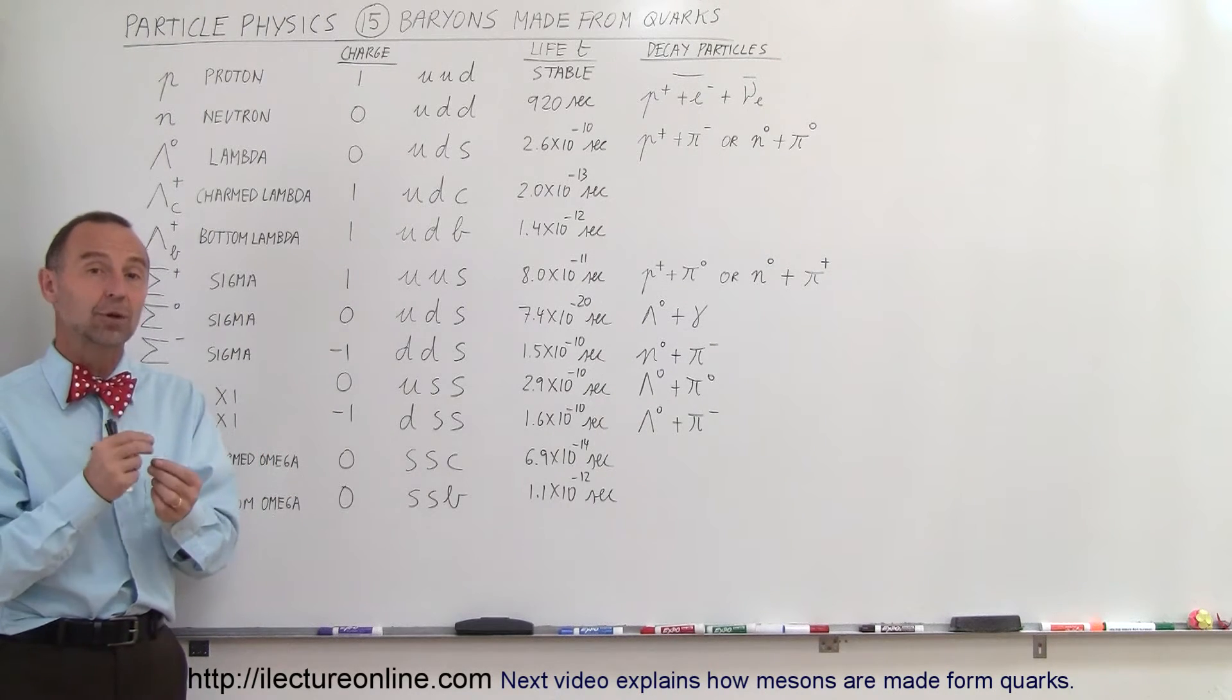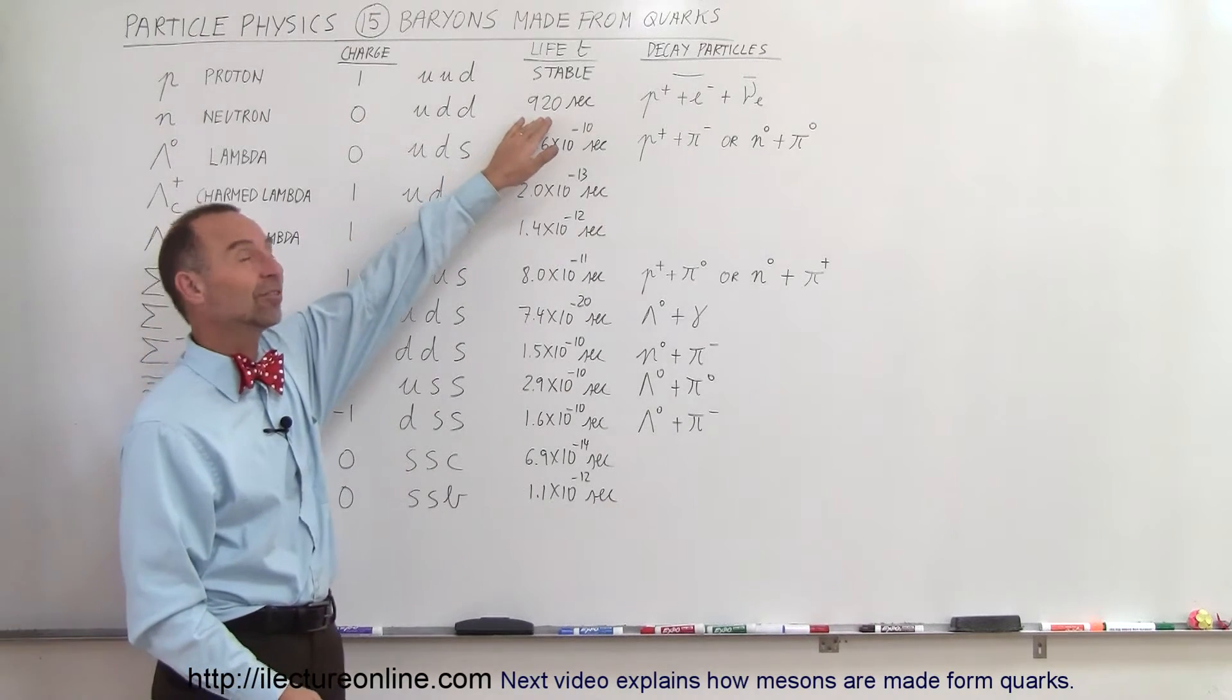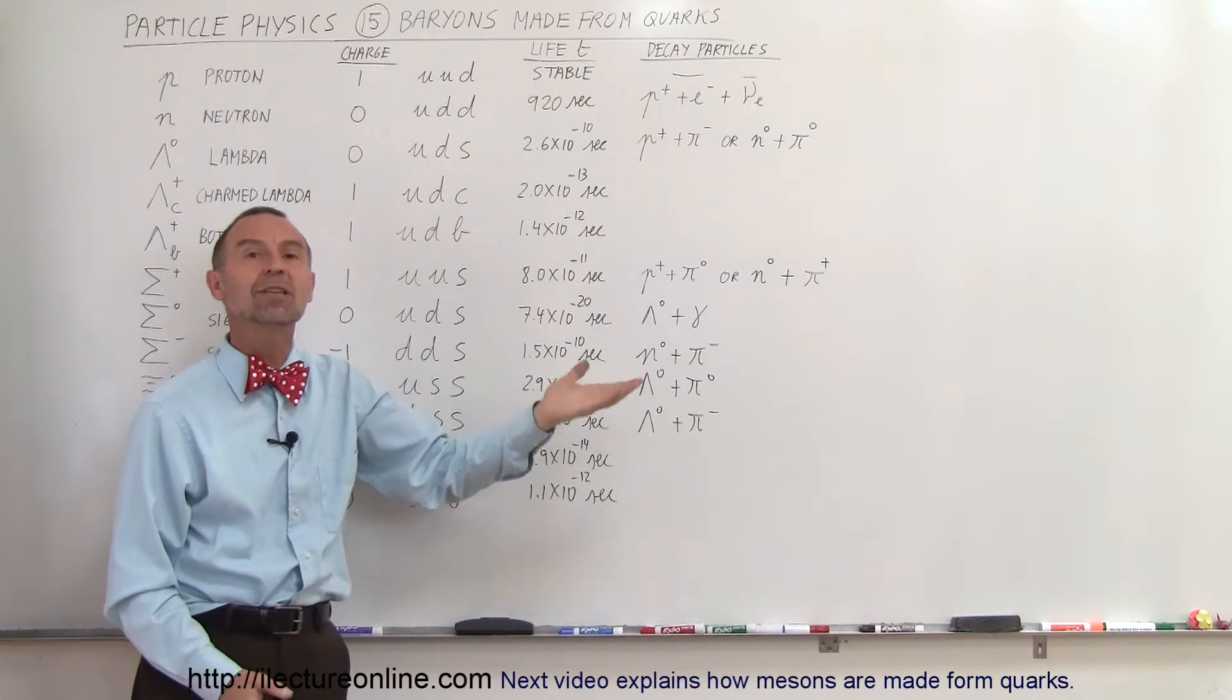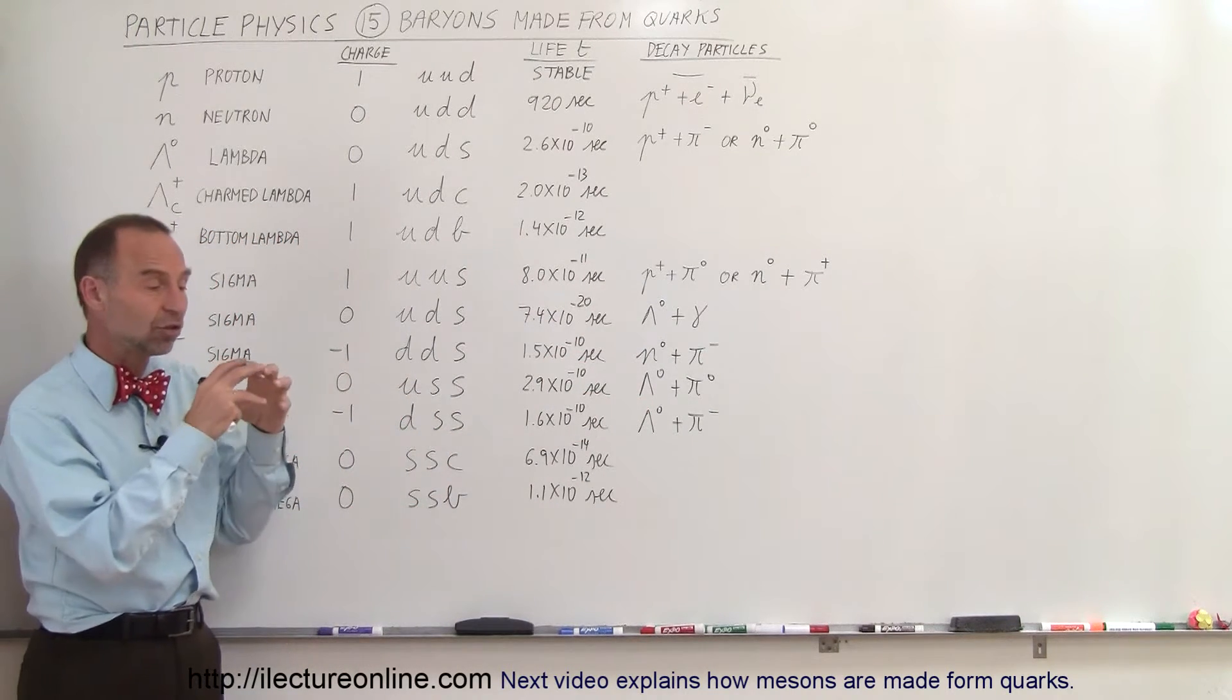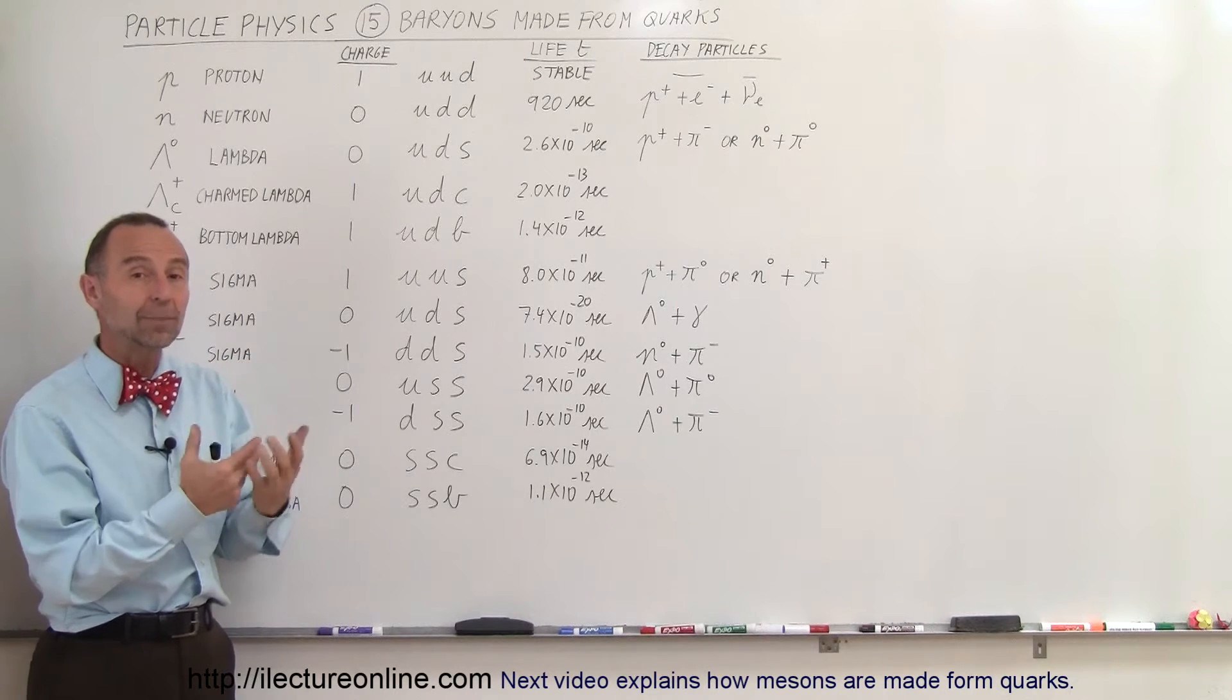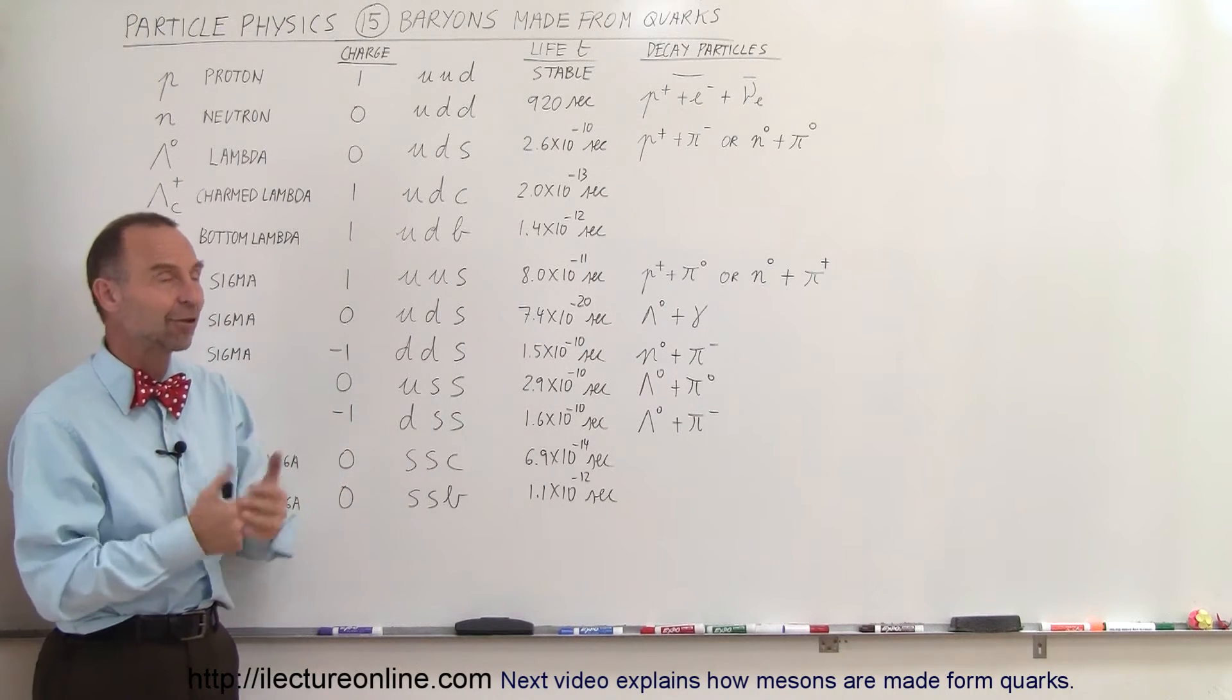The only particle that does not decay very quickly is the neutron. A free neutron will last for about 920 seconds, which is roughly 15 minutes, before it decays. A neutron which is contained within the nucleus will typically last a whole lot longer than that, which is a good thing for us, otherwise matter would decay very quickly.